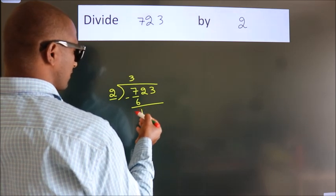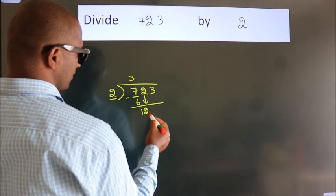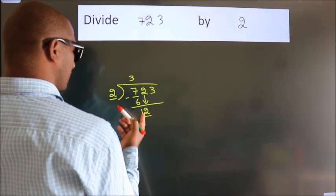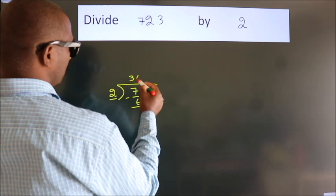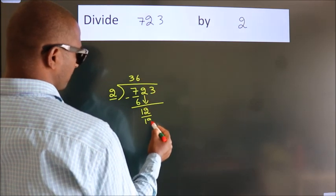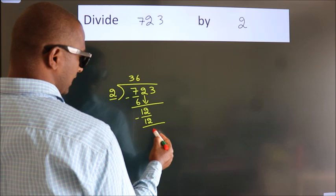After this, bring down the beside number. 2 down makes 12. When do we get 12 in the 2 table? 2, 6, 12. Now we subtract and get 0.